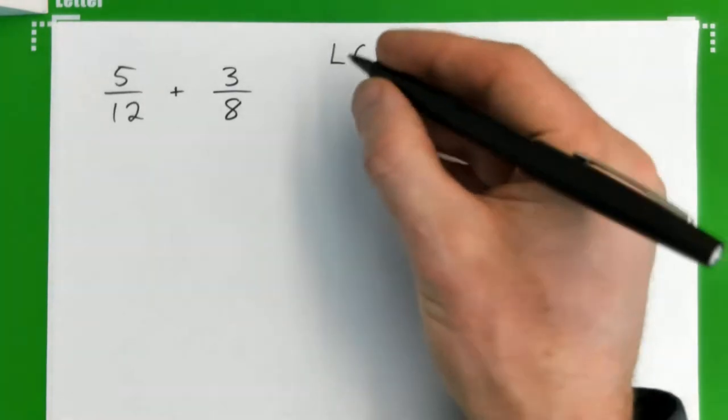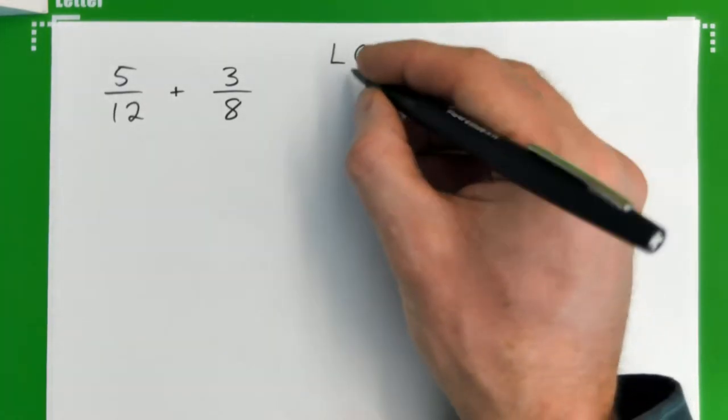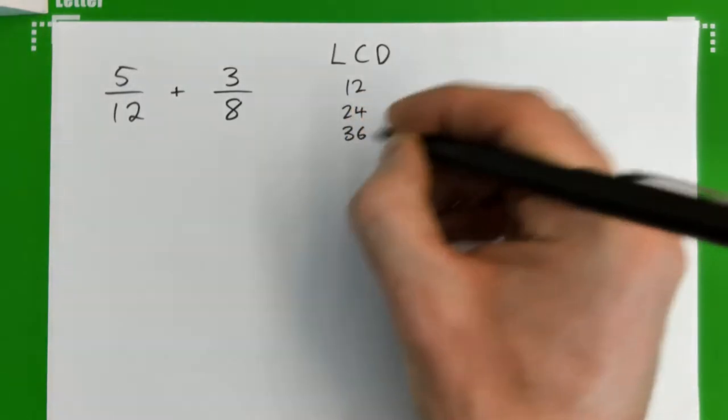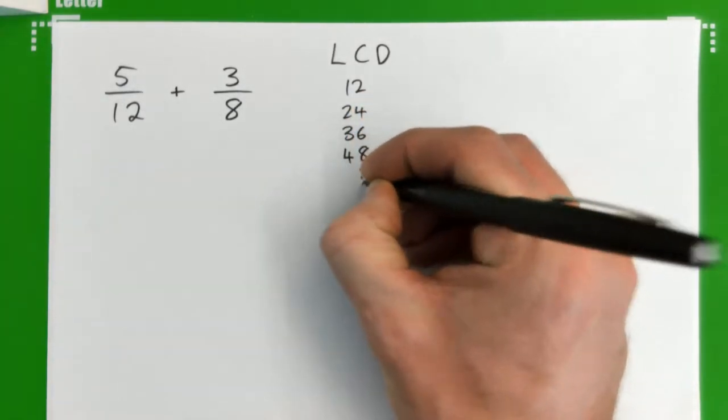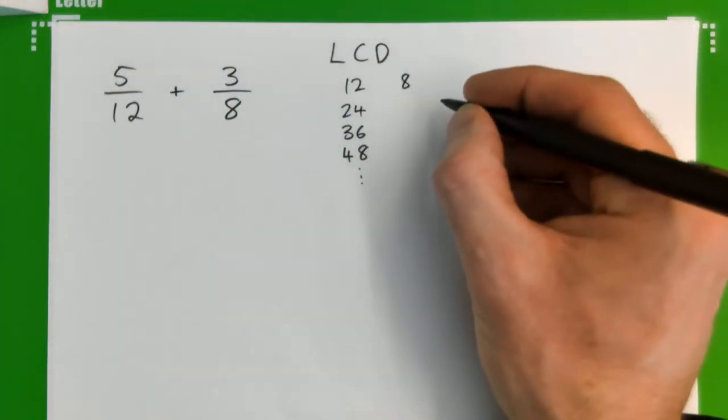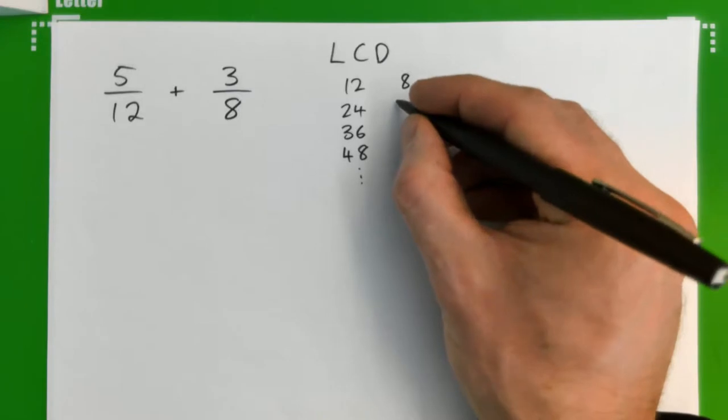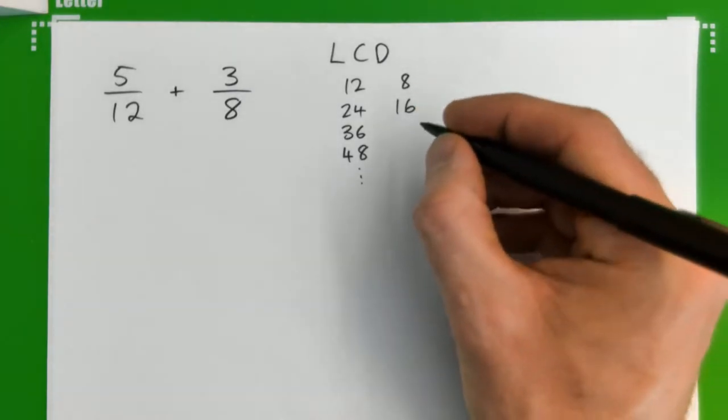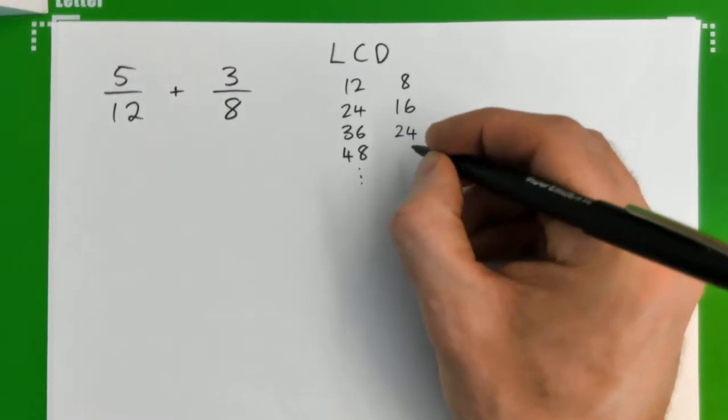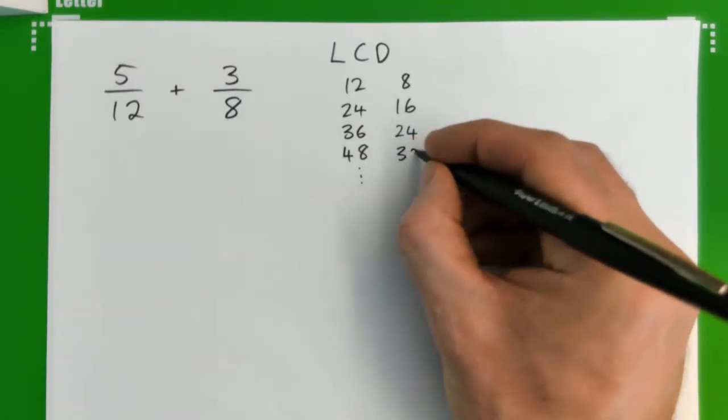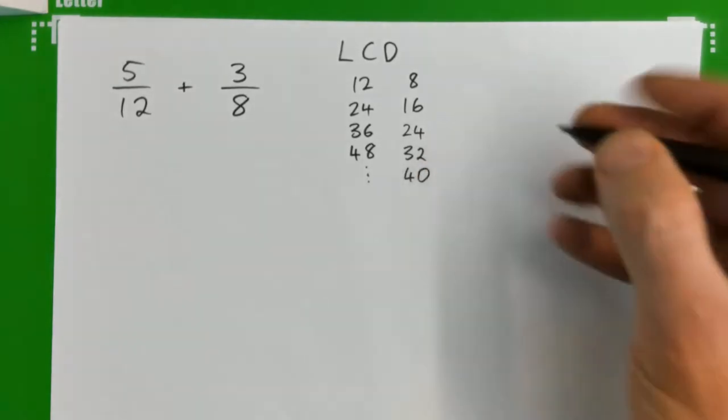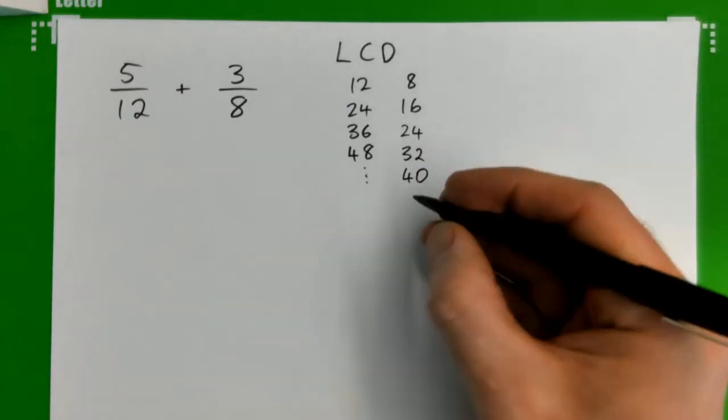One way to do that is to list the multiples of each number. So, like 12, 24, 36, 48, and so on. We won't go too far. And then list the multiples of 8: 8, 16, 24, 32, 40, and so on. And actually, that goes to 48.